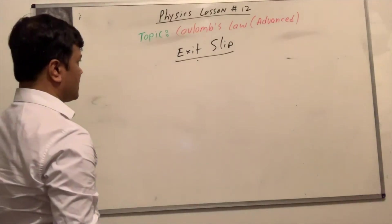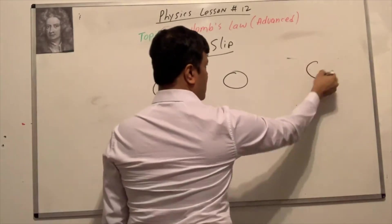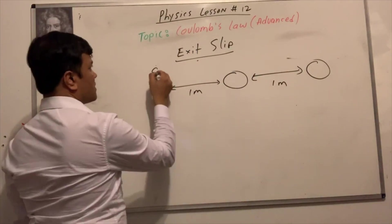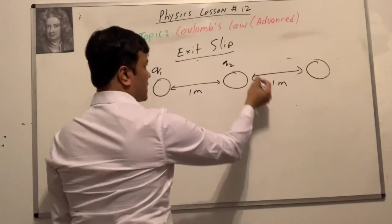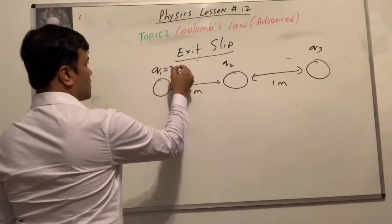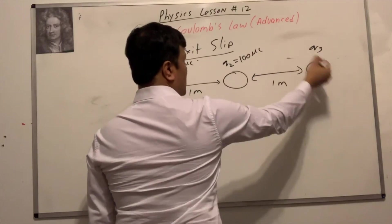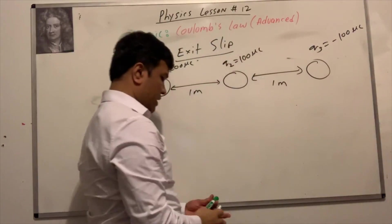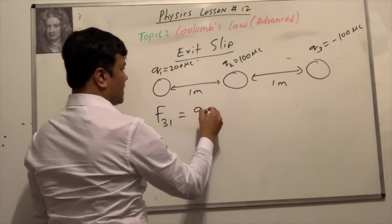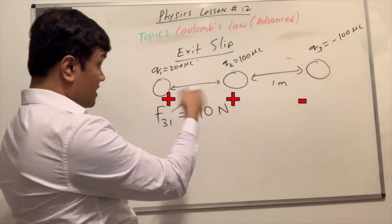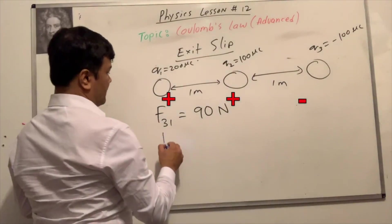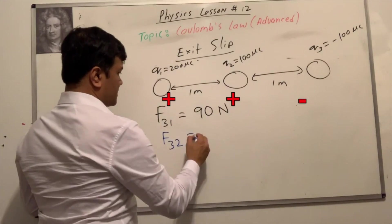Now let's do a similar practice problem. Q1, Q2, and Q3 are each one meter apart. Let's say Q1 is 200 microcoulombs, Q2 is 100 microcoulombs, and Q3 is negative 100 microcoulombs. I can tell you that F31 is 90 Newton. What I want you to find is F32.